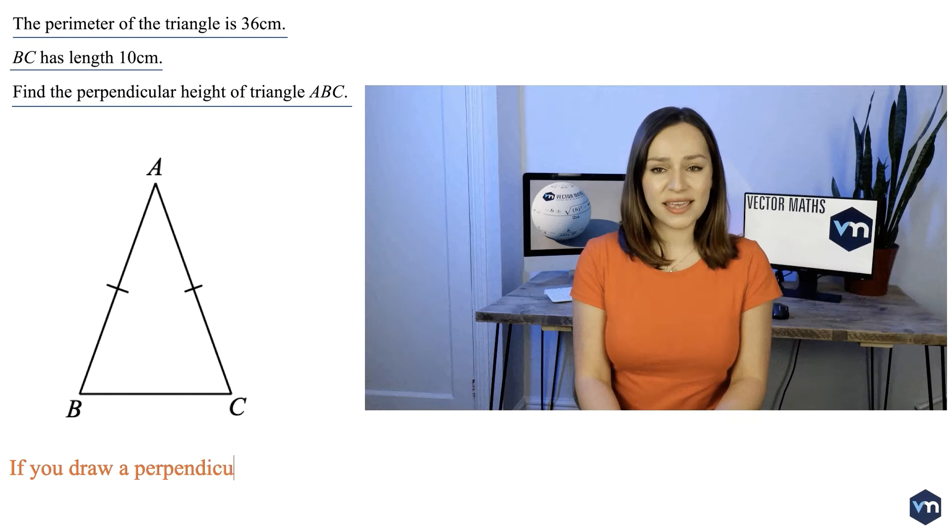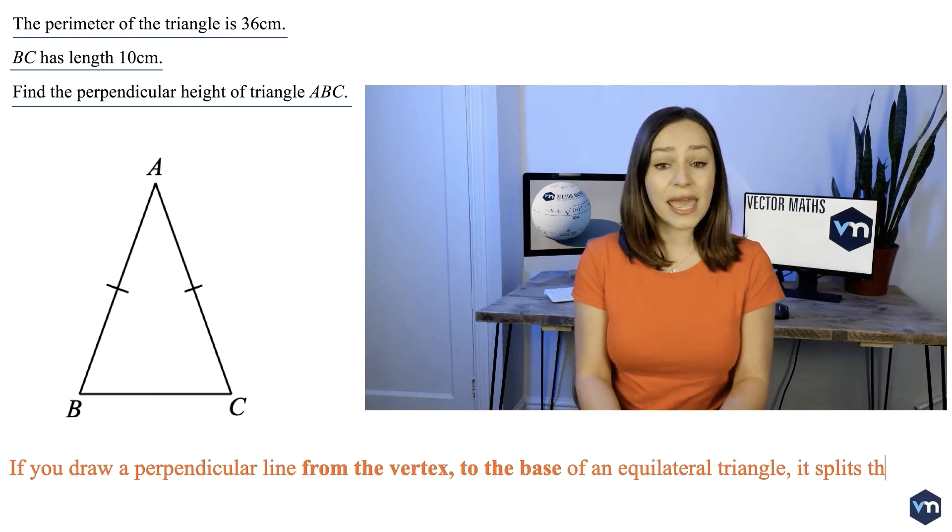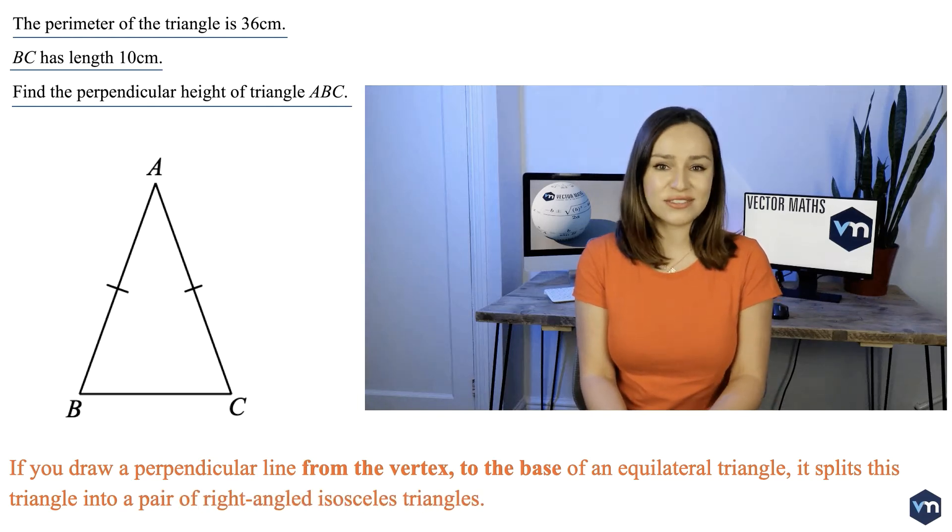If you draw a perpendicular line from the vertex to the base of an equilateral triangle, it splits this triangle into a pair of right-angled isosceles triangles.